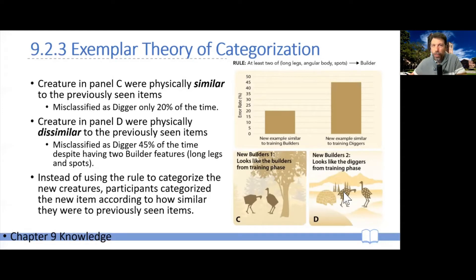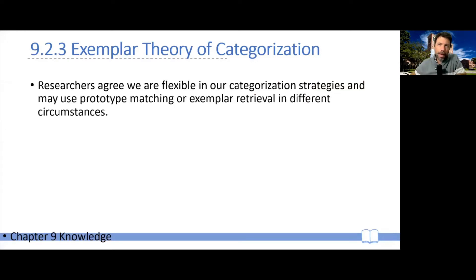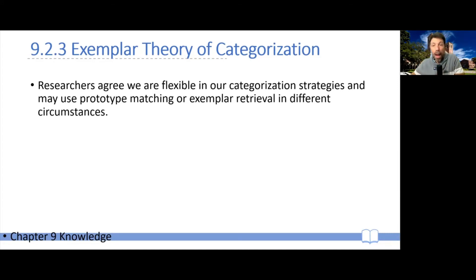This essentially says it's not true, as the prototype theory claimed, that people forget the exemplars — you actually carry them with you. Overall, researchers tend to agree that we probably flexibly categorize using either prototypes extracted from what we've encountered, or actual exemplars we have encountered, according to the circumstances. However, both the exemplar and prototype theory have severe limitations, relating to three points in particular.